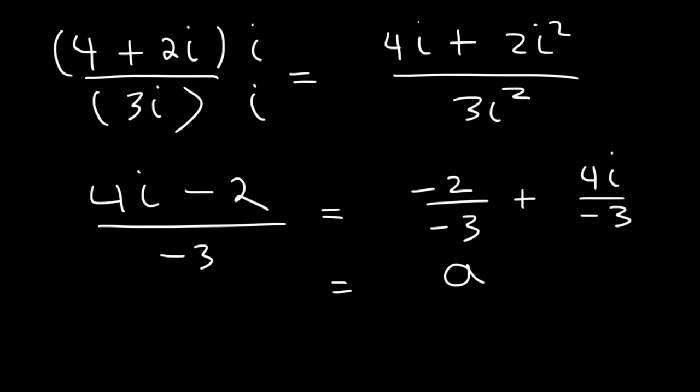So in standard form, that is in a plus bi form, a is positive 2 over 3. The two negative signs will cancel. b is negative 4 over 3, and then times i. So that's the answer.